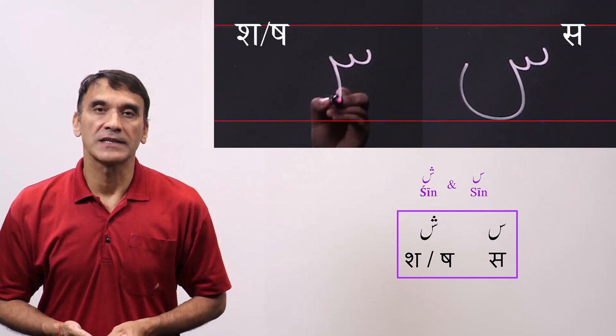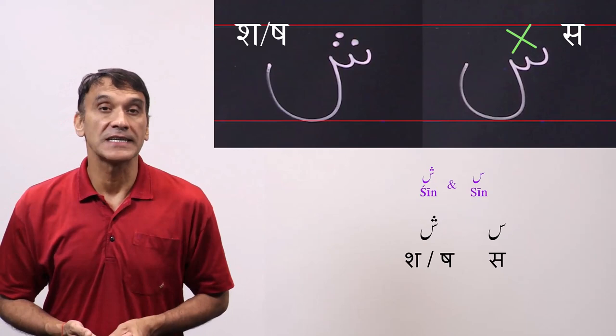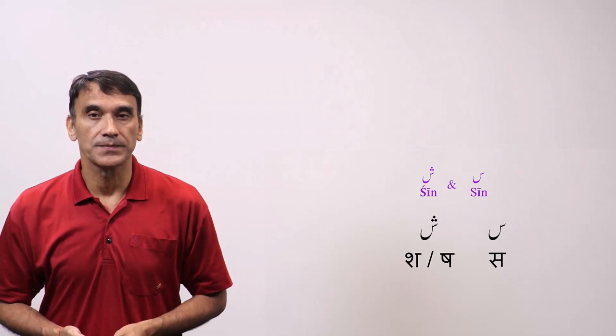The Hindi sounds and letters representing seen and sheen are sir and shea. Both Hindi shea letters are written in Urdu with sheen. The shape of both letters is pretty much the same except seen does not have the nuptas, the dots on top, and sheen has three nuptas on top.